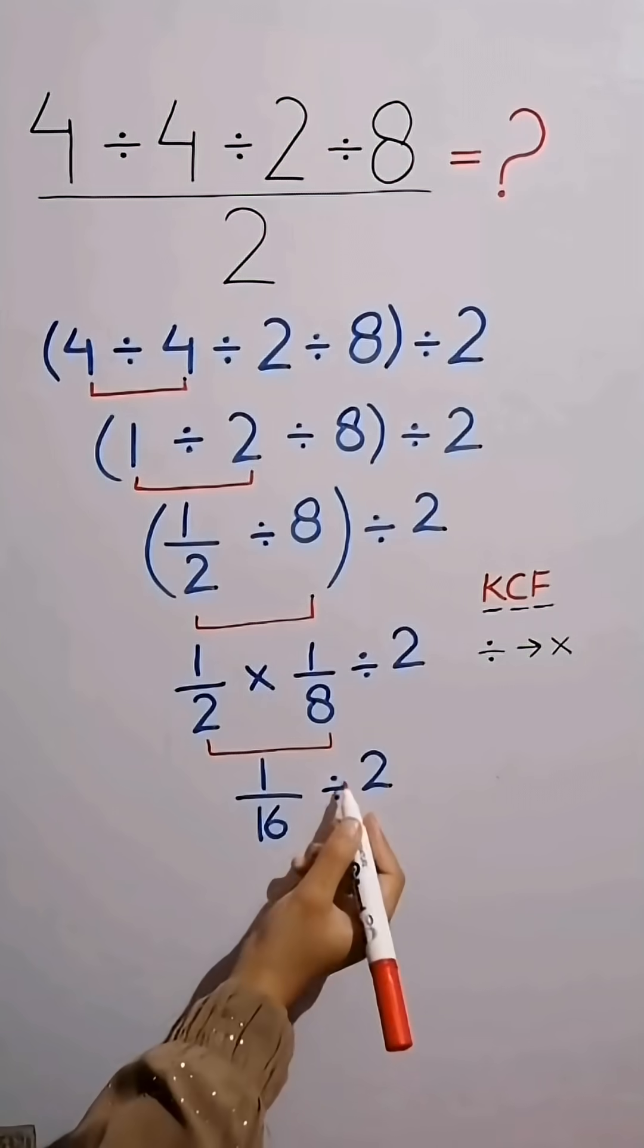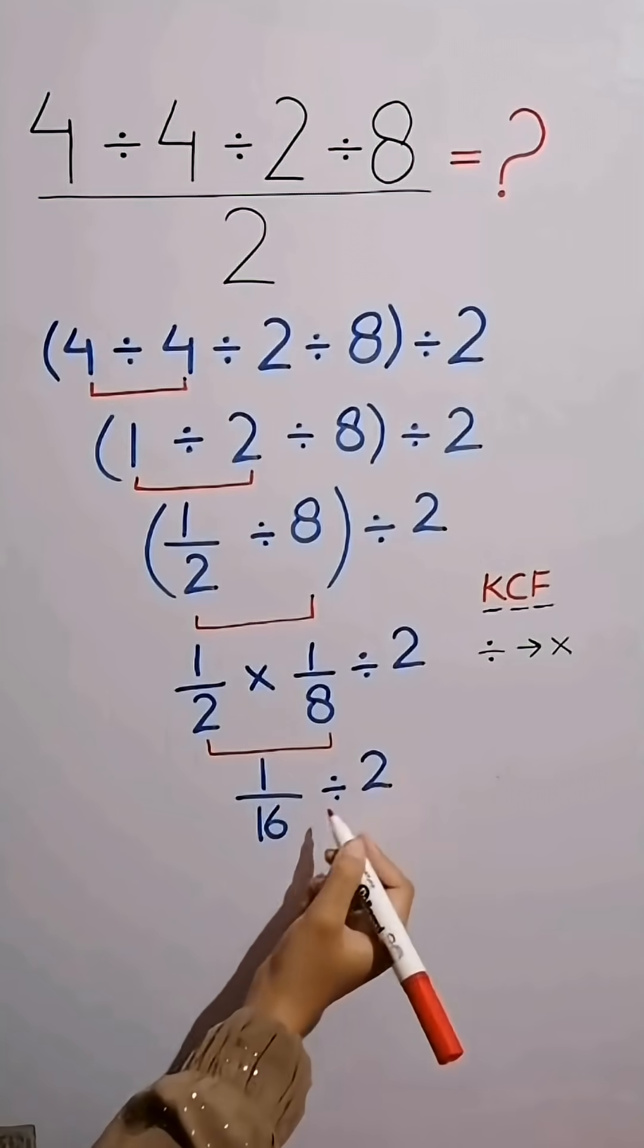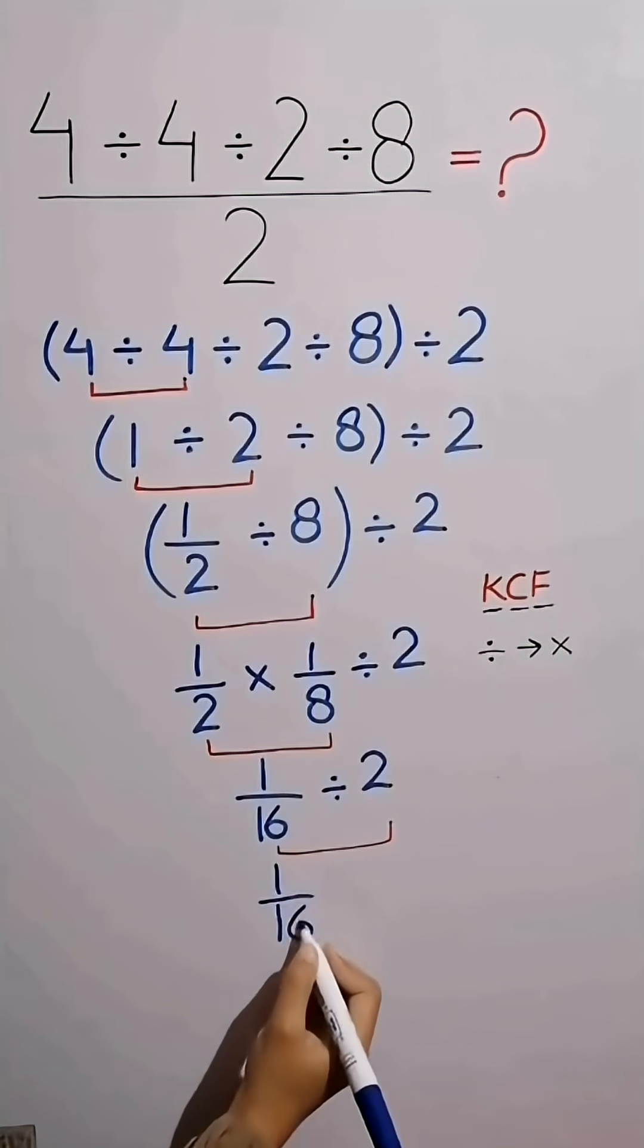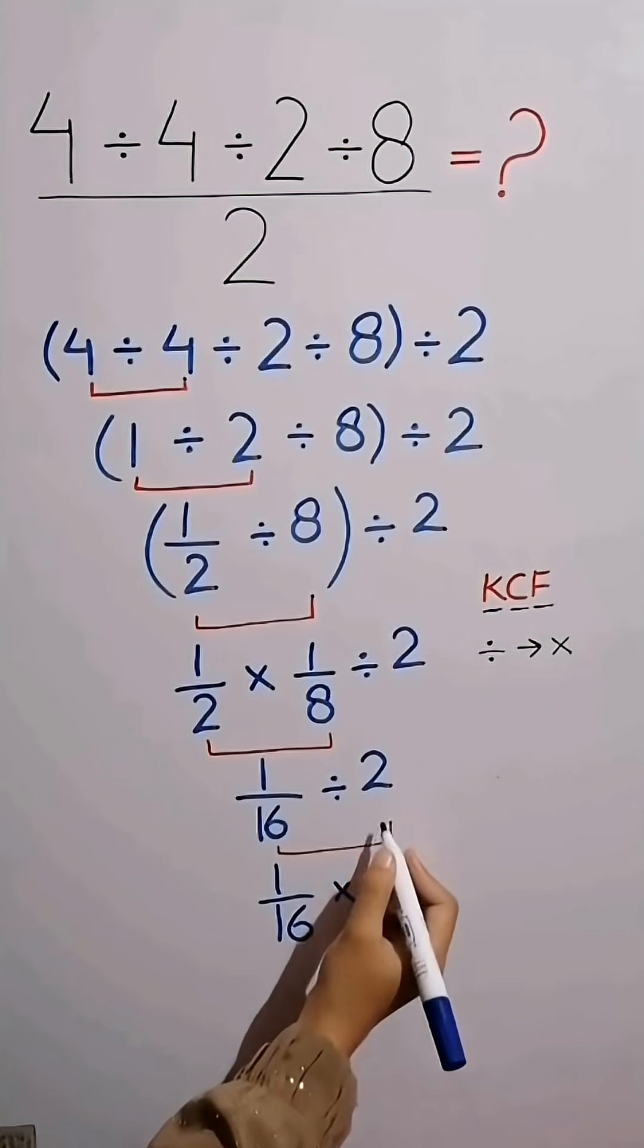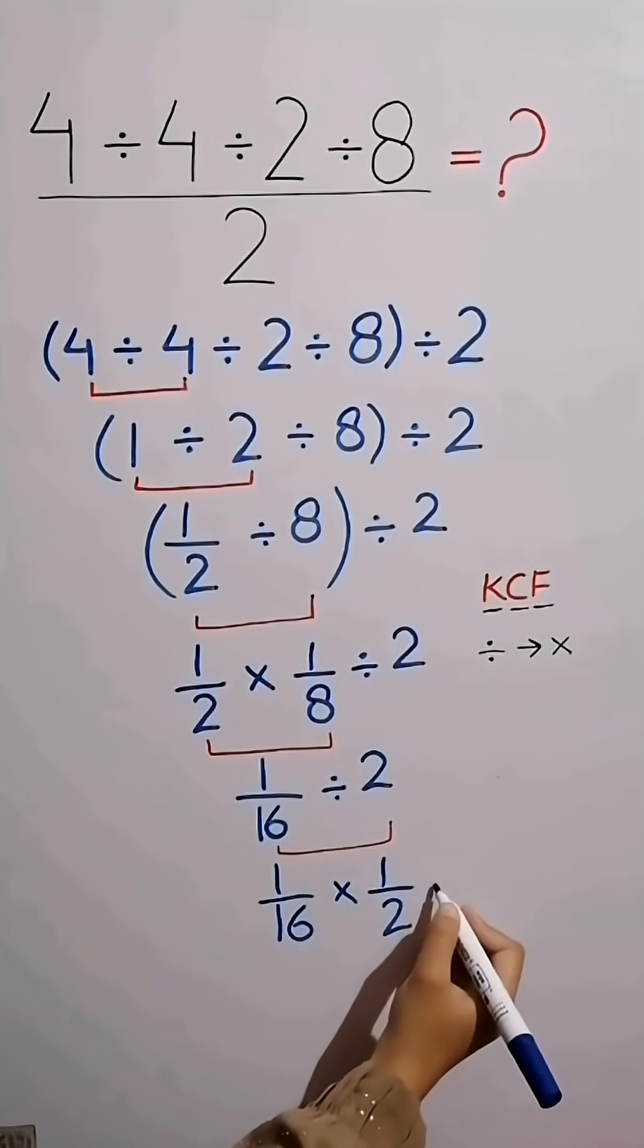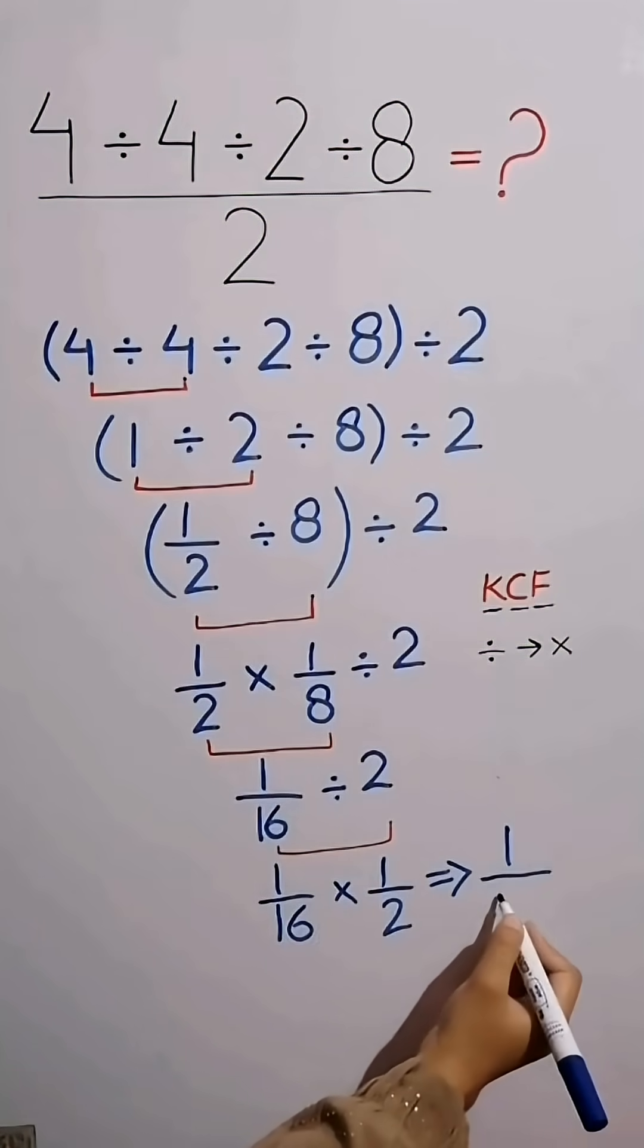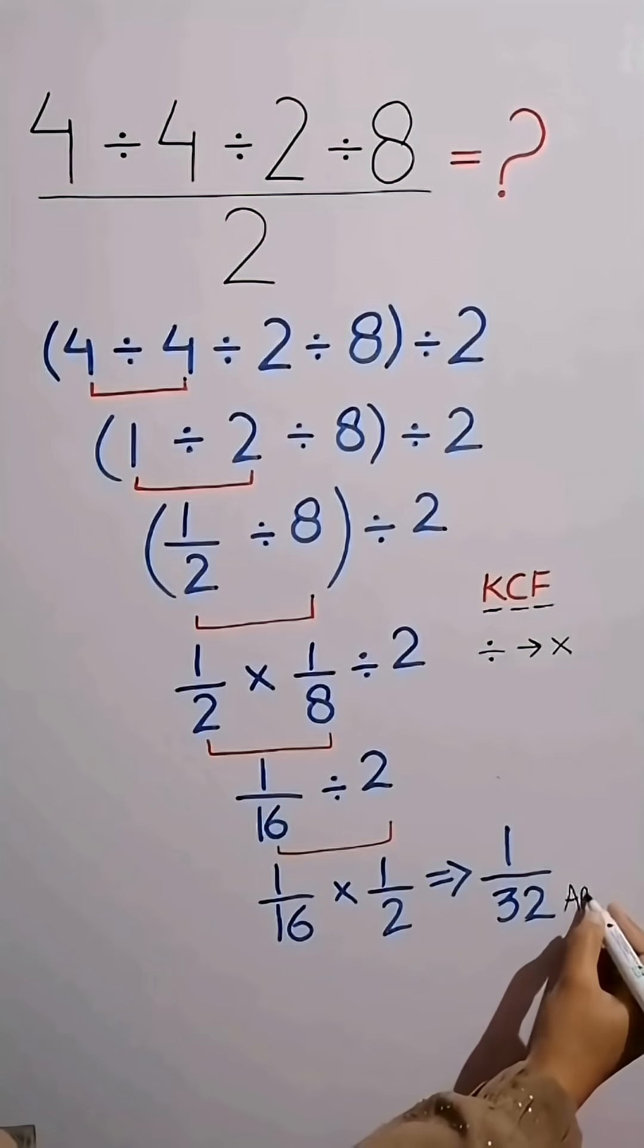Again there is a division between two terms. So, again we will apply KCF rule. 1 over 16, division changes into multiplication, and 2 becomes 1 over 2. 1 times 1 equals 1, 16 times 2 equals 32. We get the final answer.